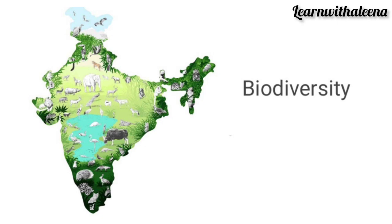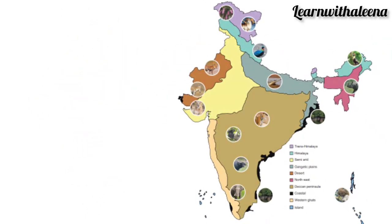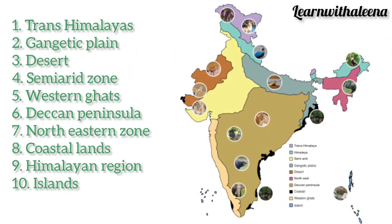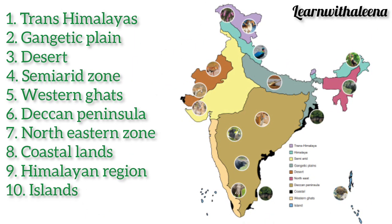These biogeographical regions include the Trans-Himalayas, Gangetic Plain, Desert, Semi-arid Zone, Western Ghats, Deccan Peninsula, Northeastern Zone, Coastal Land, Himalayan region, and Islands.